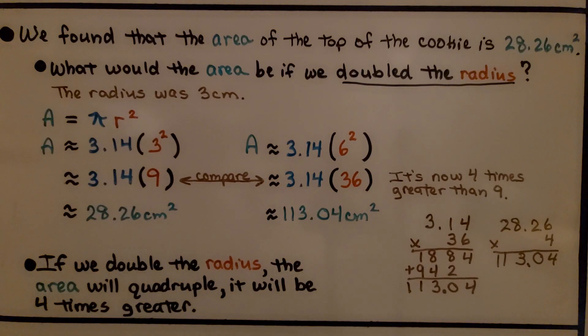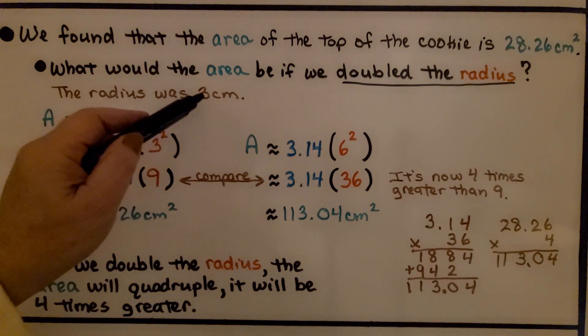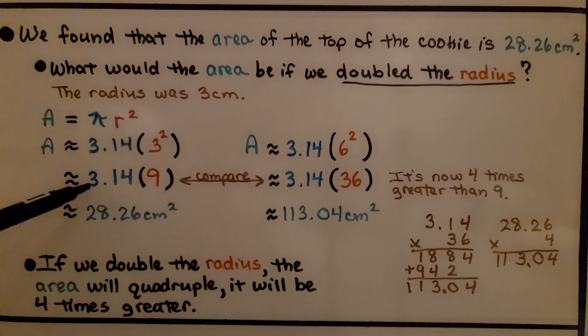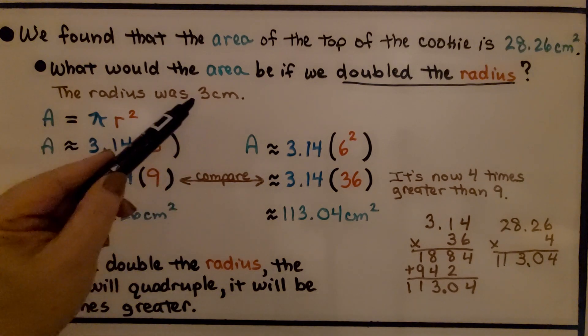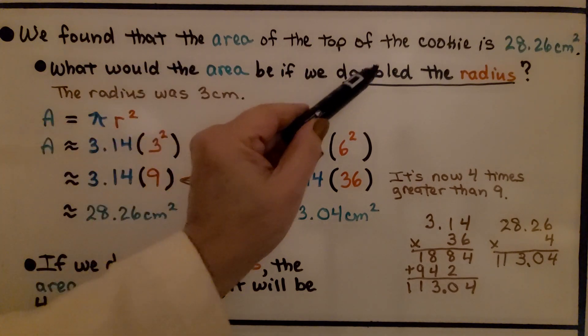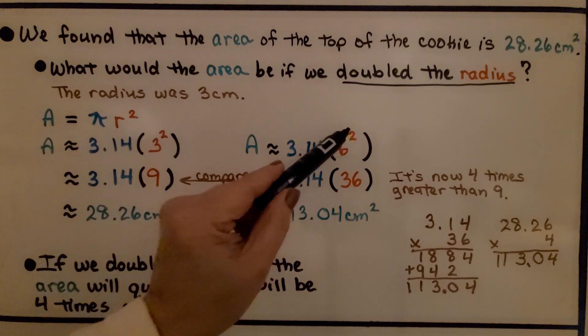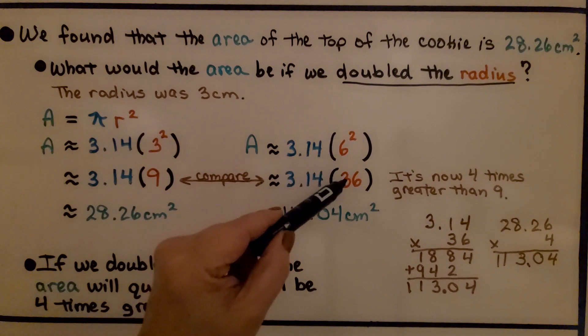We found that the area of the top of the cookie is 28.26 centimeters squared. What would the area be if we doubled the radius? Well, the radius was 3 centimeters. We did 3 squared, we got 9. We multiplied it by 3.14 and approximately got 28.26 centimeters squared. If we doubled the radius, we're going to double the radius, and the radius was 3, so now we're going to do 6 squared, which is 6 times 6, which is 36.